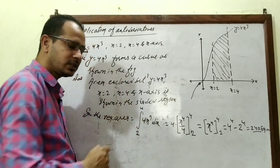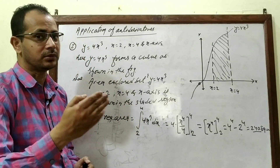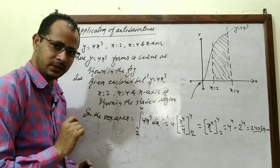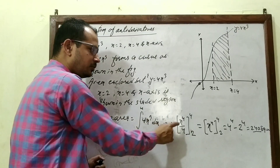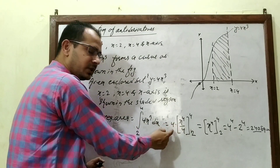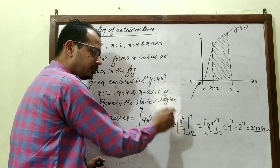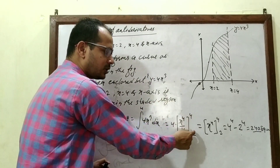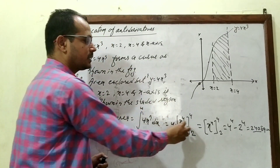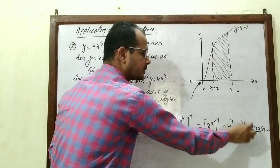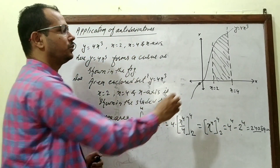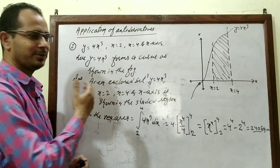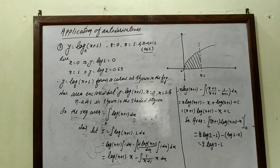Integrating 4x³ using the formula x^(n+1)/(n+1): the integral of x³ is x⁴/4, so 4 · x⁴/4 = x⁴. Evaluating from x = 2 to x = 4: 4⁴ − 2⁴ = 256 − 16 = 240 square units.